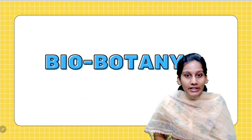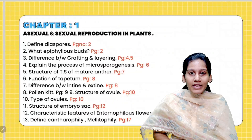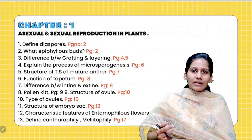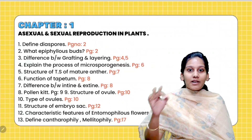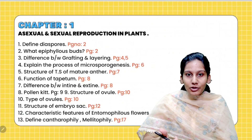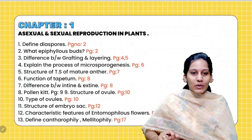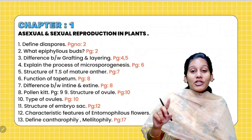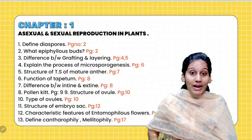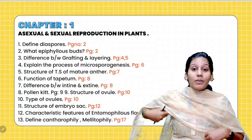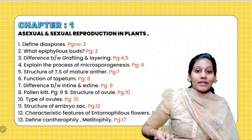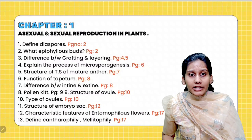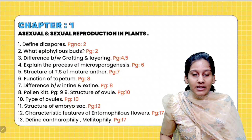First of all, we have almost two to three chapters in the school. I will give you the important questions in the next video. The first chapter is Sexual Reproduction in Plants. There are Biomax students and Pure Science students.